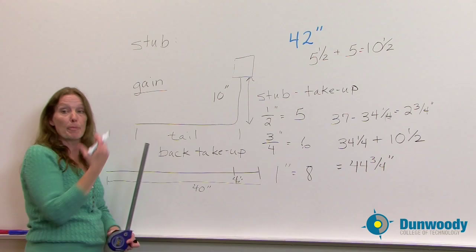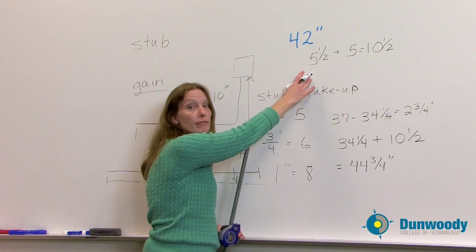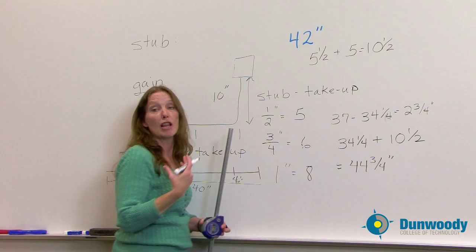So we get our gain of 2 and 3 quarters for our particular bender. We had a stub take up value of 5 and a half for our particular bender. And we have a back take up amount that we lost on that tail piece of 2 and 3 quarters of an inch.